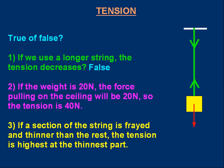Number one is false. The length of the string does not affect the tension — it certainly doesn't make the tension decrease. If you use a very long string, maybe the weight of the string itself would become important, but that would tend to increase tension. Using a longer string, if the string is light, has no effect on tension. Number two is also false. If you hang a weight of 20 newtons, there will be a 20 newton downward force on the ceiling, and the tension is 20 newtons. Number three is also false. The tension is the same all the way along the string, even if part of it is thin. Later on you may learn about something called stress — stress would be higher if the string was thin — but the tension doesn't change along the string.